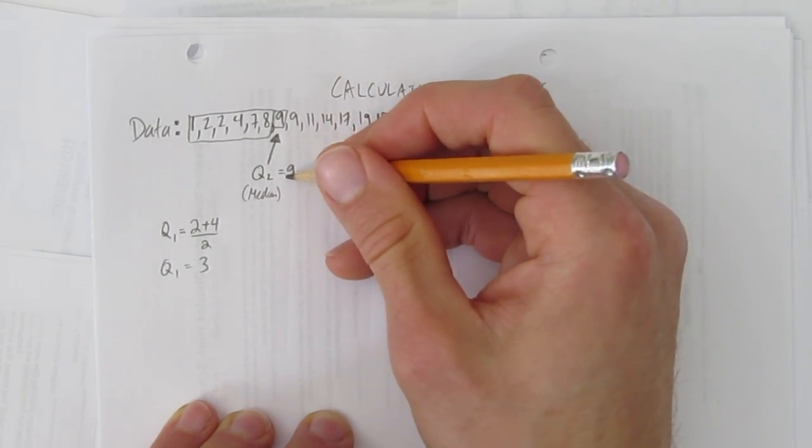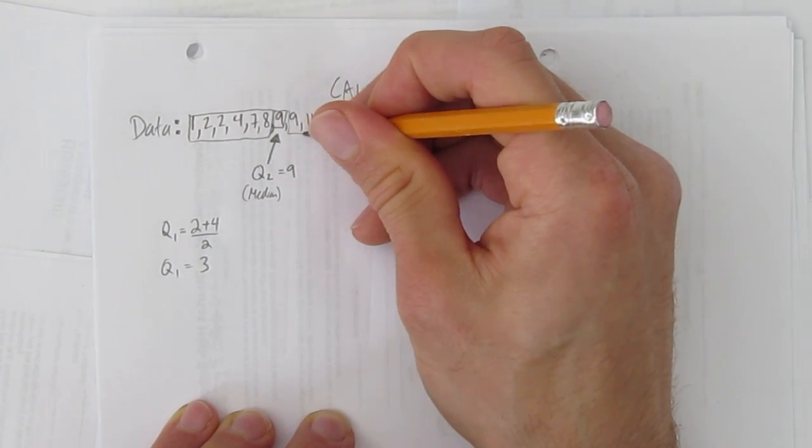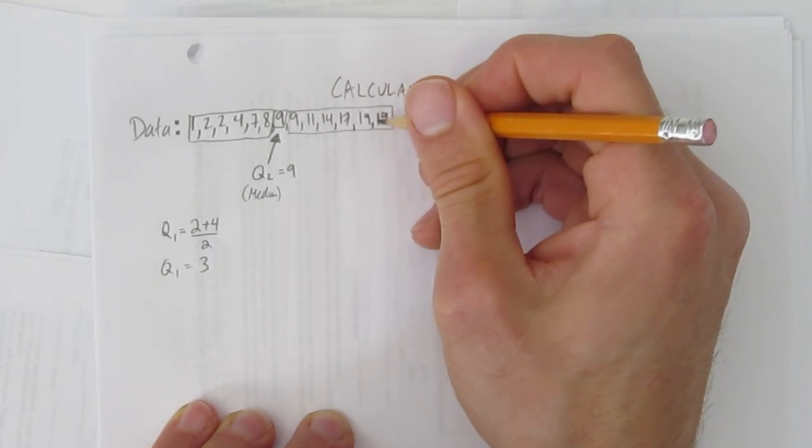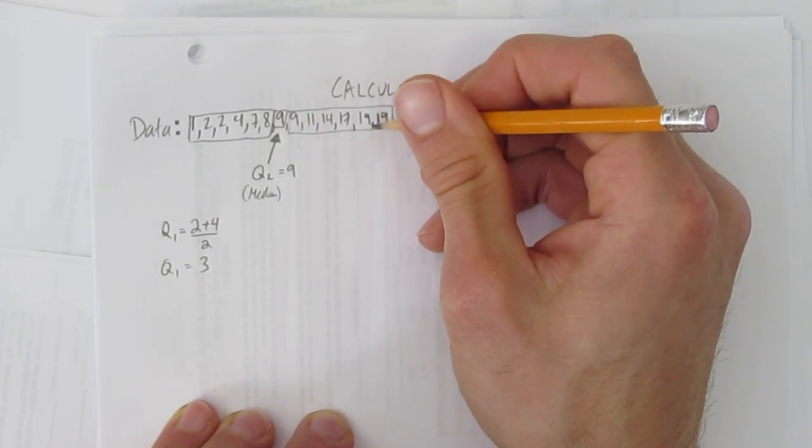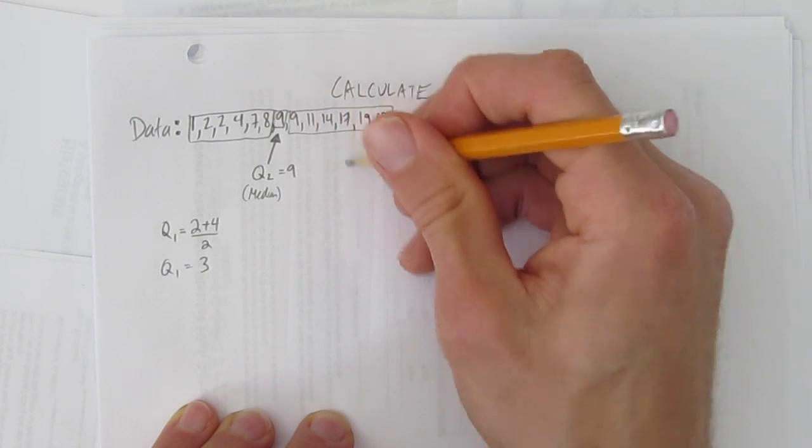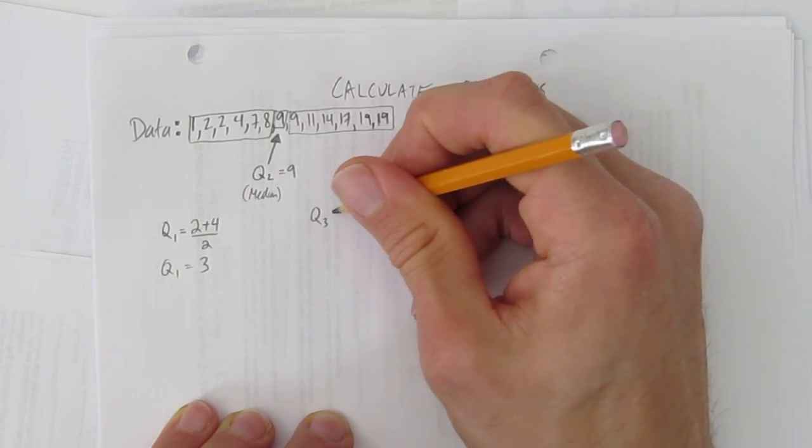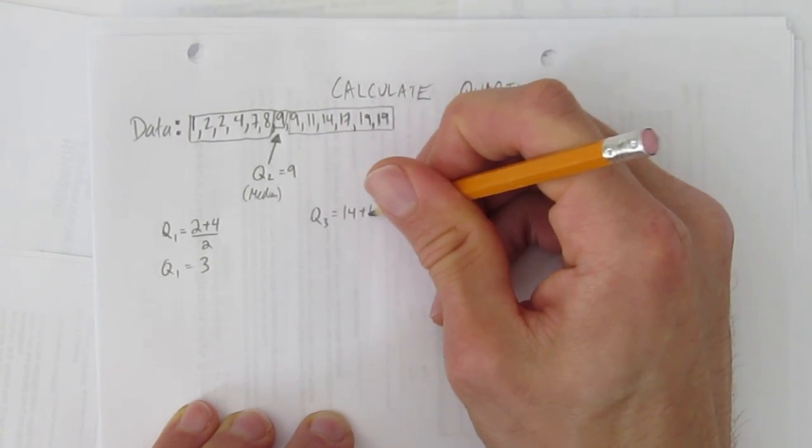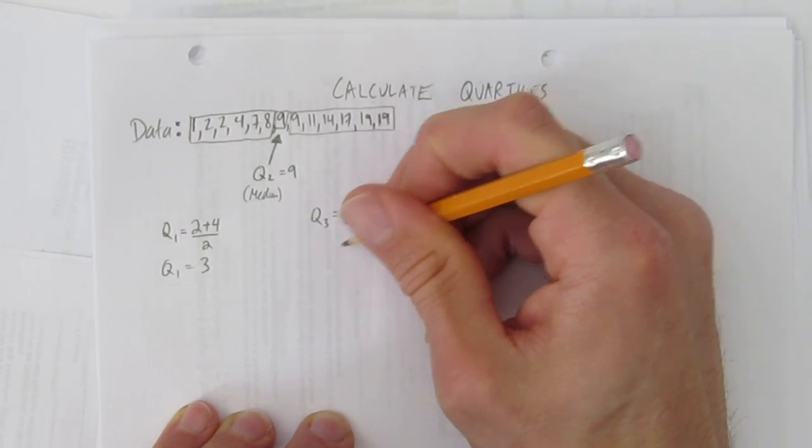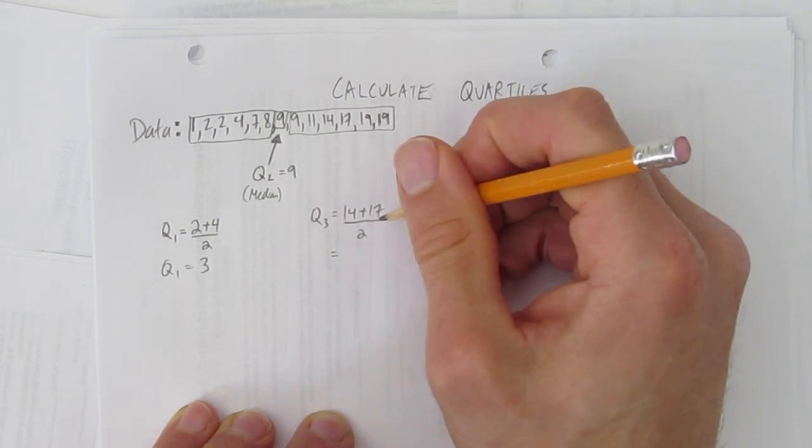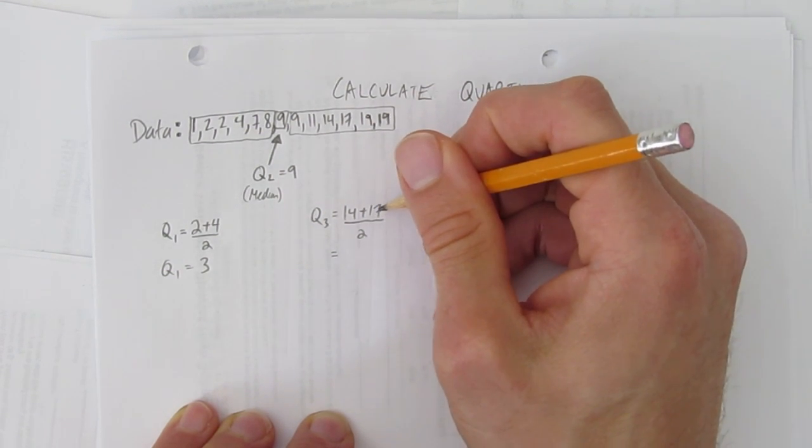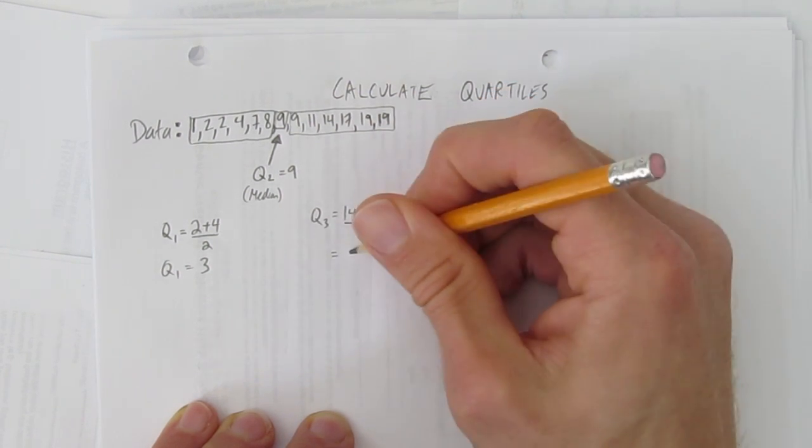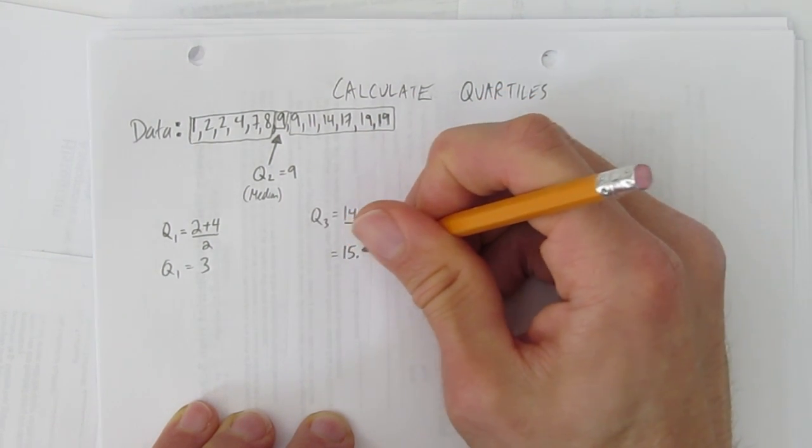And I already know Q2 is 9. I'm going to do the same thing I did for Q1. On the top half of the data, again I have 6 numbers, so I want to take the average of the middle 2. 6 numbers means I want the 3rd number and the 4th number. So what's 14 plus 17 divided by 2? That's 31. What's 31 divided by 2? 15.5.